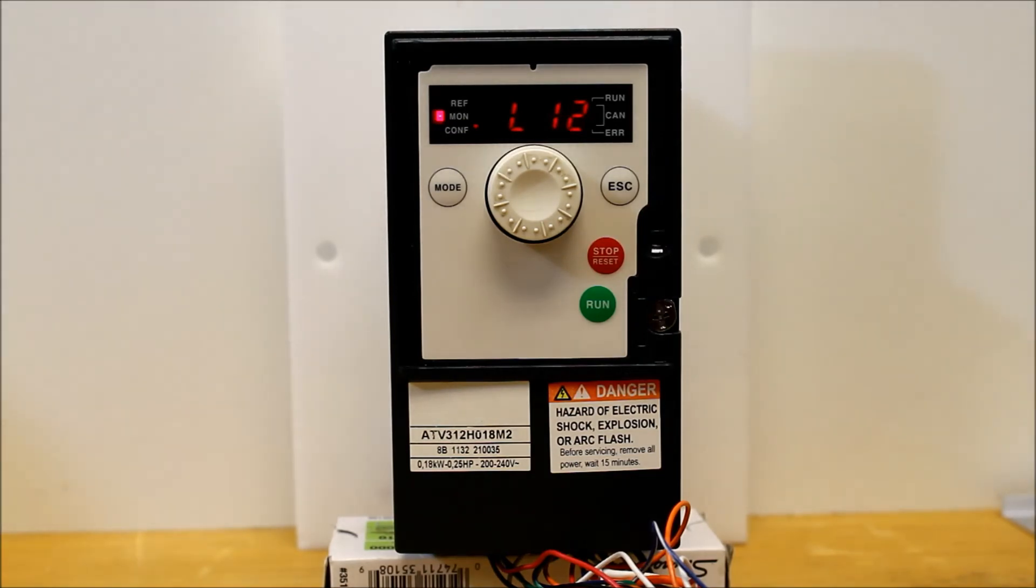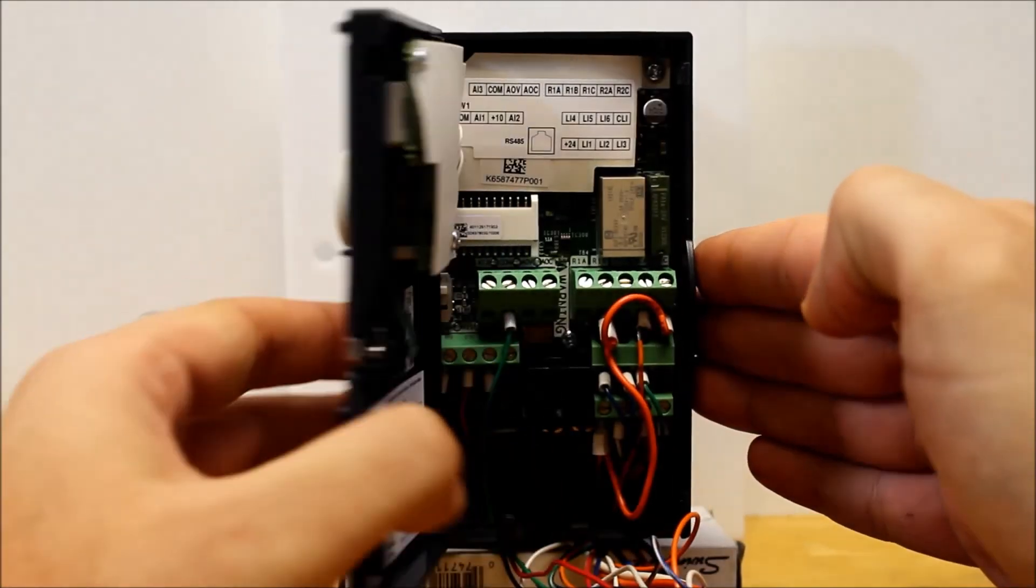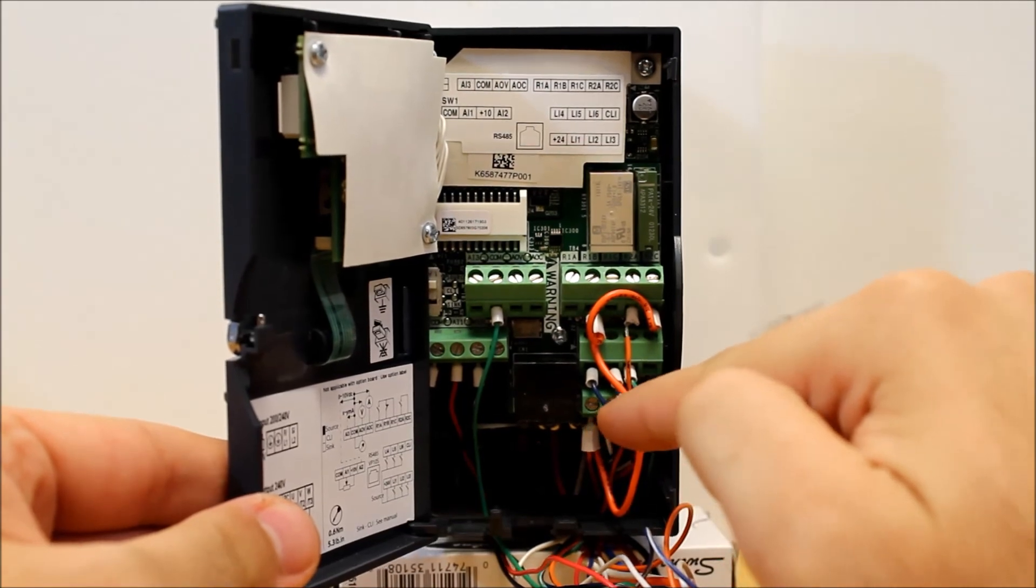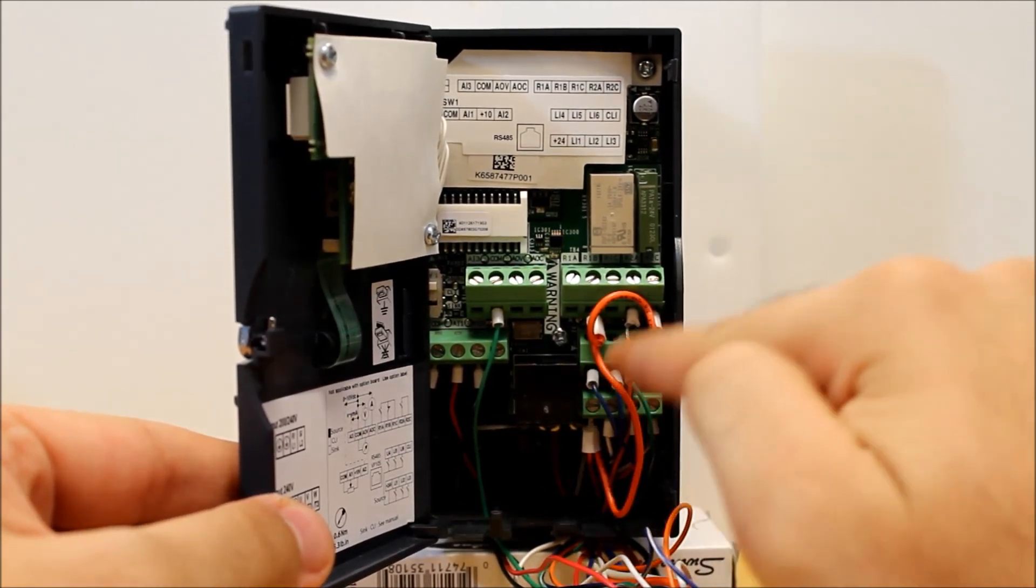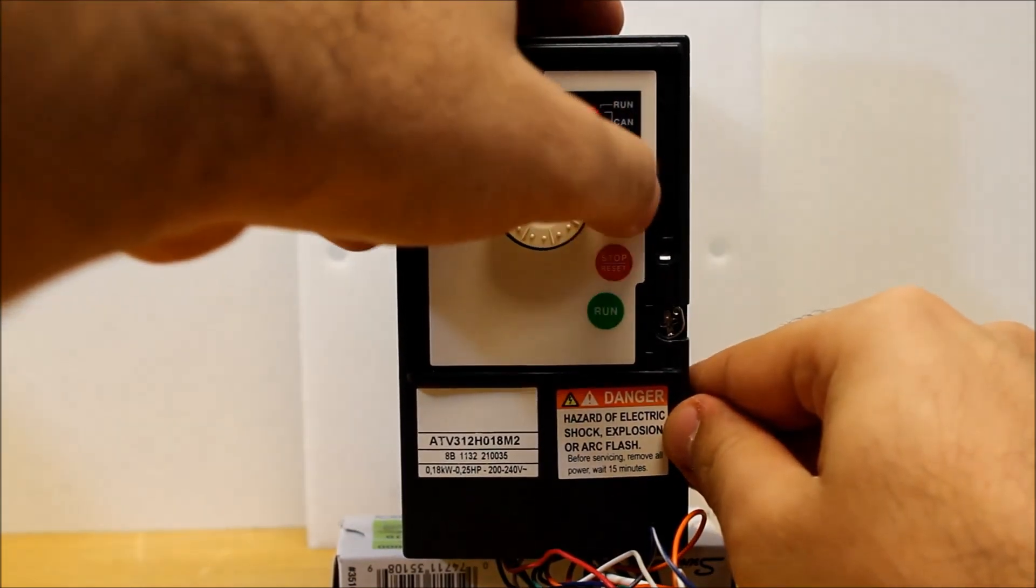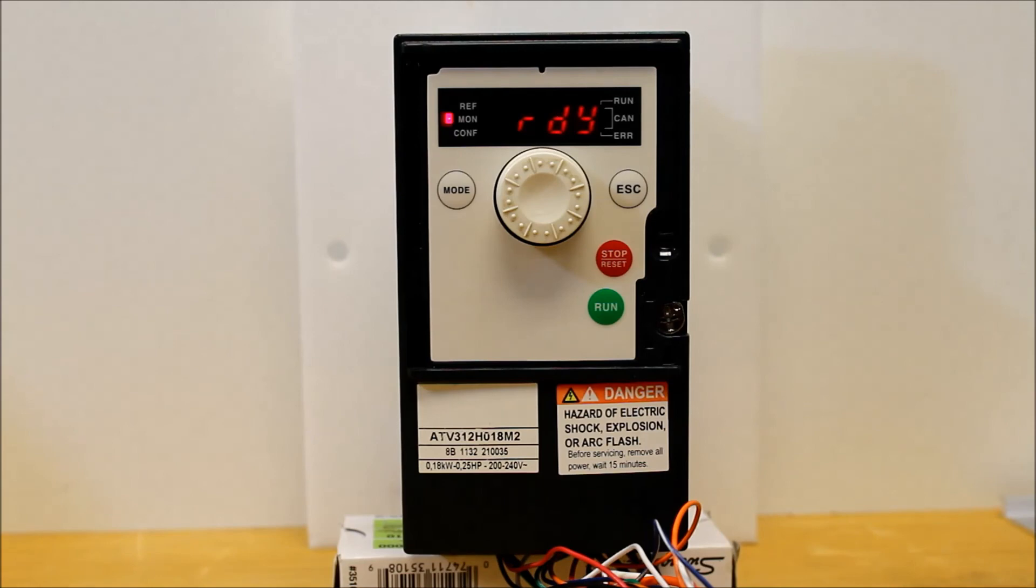And along with this, just keep in mind that your logic inputs will have to be wired up. As you can tell, on the bottom here, you have LI1 through LI6. So make sure that you wire accordingly. And this basically concludes how to wire and program an ATV312 drive to run in reverse along with run forward.